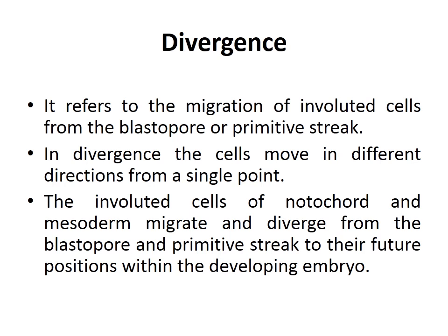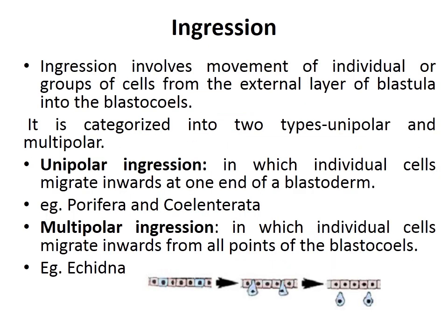Divergence is the opposite of convergence. Once cells have involuted through the blastopore or primitive streak, they migrate in different directions from that single point. The involuted cells of notochord and mesoderm diverge from the blastopore and primitive streak to their future positions within the developing embryo. This process is known as divergence.